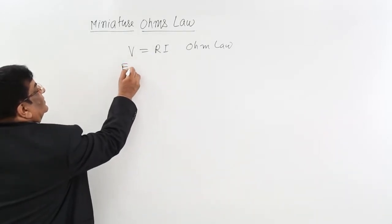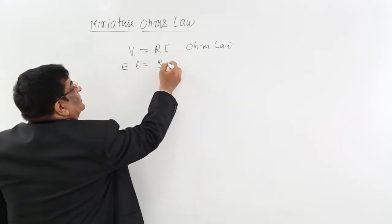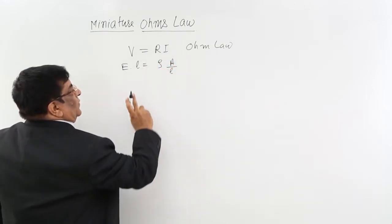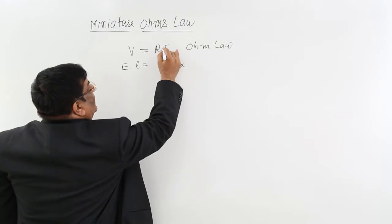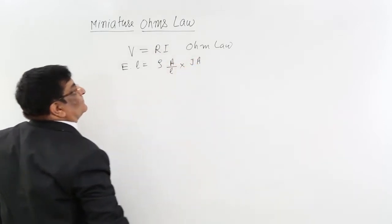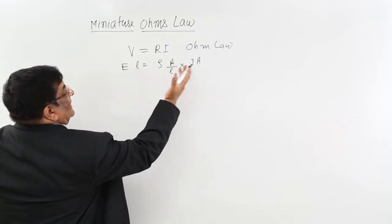So this is E times length of the conductor. This R involves rho, area, and length, multiplied by I. I equals J times area. Now here any cancellations?